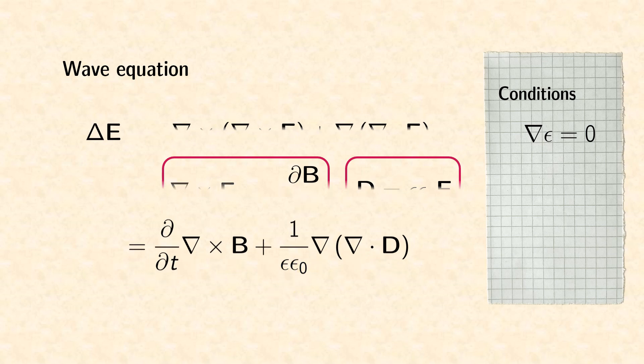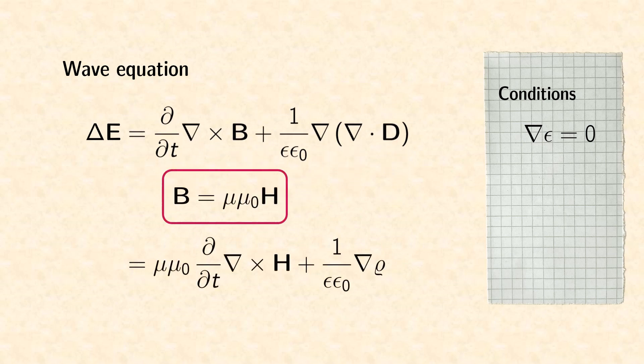In the next step, we replace the magnetic induction by the magnetic field in the first term. We can place the permeability in front of the differential operators since we restricted ourselves to homogeneous materials.